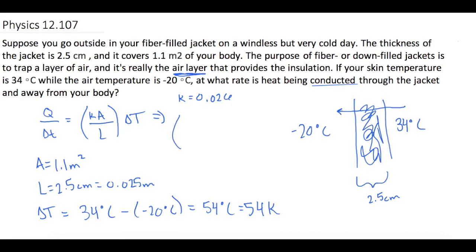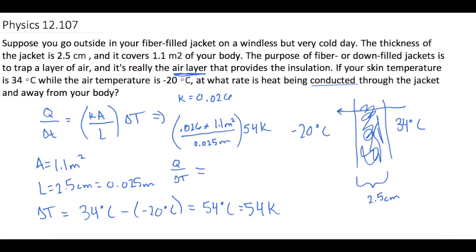Using that K value, we have 0.026 times the area of 1.1 square meters, divided by 0.025 meters, multiplied by the change in temperature of 54 Kelvin. That gives us a Q over delta T of 61.776 watts, or approximately 62 watts.